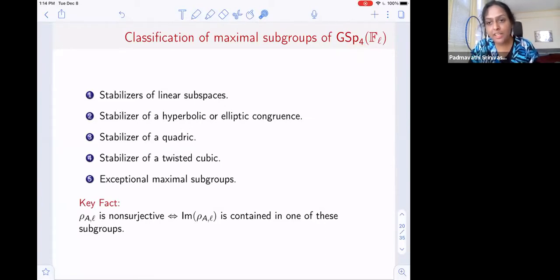Let me tell you what the classification of maximal subgroups of GSp4 looks like. For those of you familiar with the elliptic curve story, this is the analog. These are the analogs of your Borel subgroups and normalizers of Cartan subgroups. As before you have stabilizers of flags, all of these subgroups have some kind of geometric flavor. They are matrices that preserve some configuration inside your four dimensional vector space. You have stabilizers of linear subspaces, those are your parabolic subgroups. And there are also stabilizers of some nonlinear configurations. I'm just listing them here. And there are also some exceptional maximal subgroups, sorry for overusing the word exceptional here. These are just maximal subgroups that don't fit into the other four. And the reason we care about this is if rho_A,L is non-surjective, it means the image of rho must be contained in one of these.